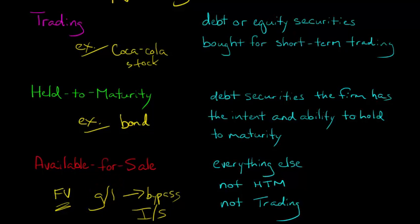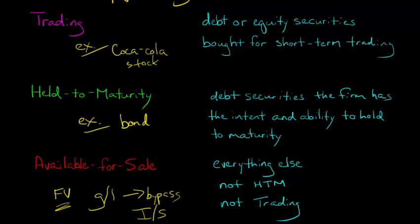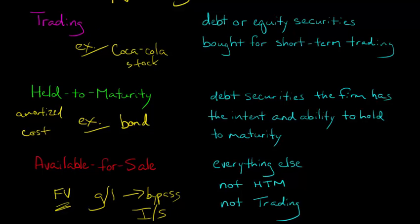I should mention that held-to-maturity securities are not recorded at fair value — they're actually recorded at something called amortized cost, which we'll talk about in our HTM video. Bear in mind, there's actually a situation in which both held-to-maturity and available-for-sale securities can be classified exactly like trading securities, with both at fair value and any gain or loss going to the income statement.